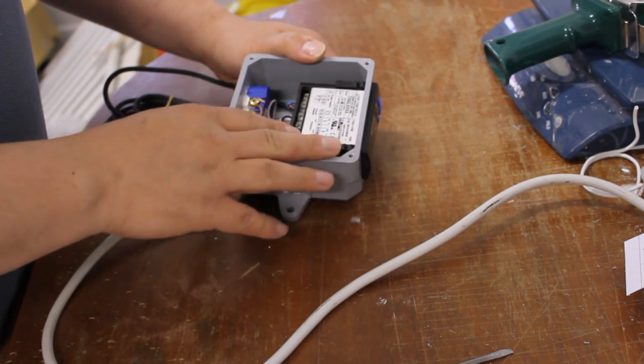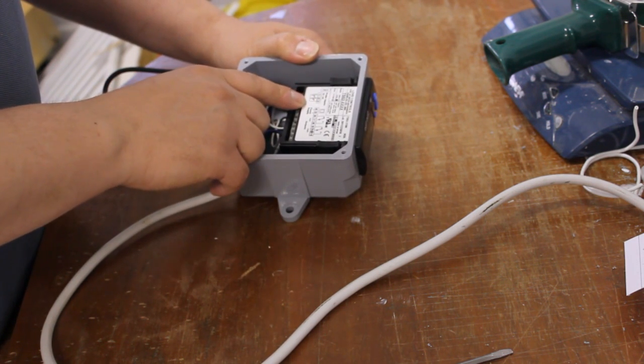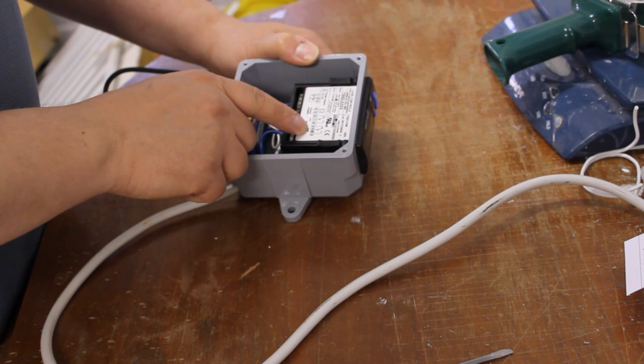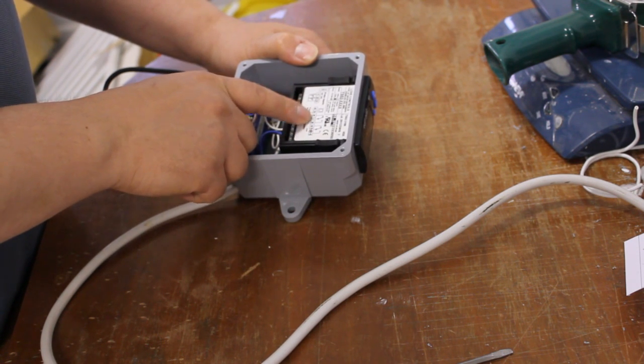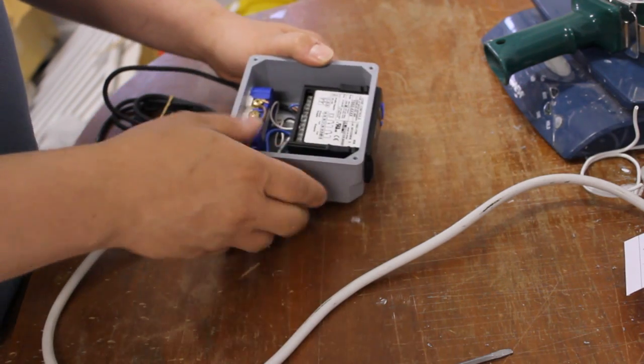So basically everything has connections except for terminal 2. That's the secondary probe that I'm not using. And I'm also not using the normally closed outputs number 6 and 9 on the relay outputs. But other than that everything is connected.